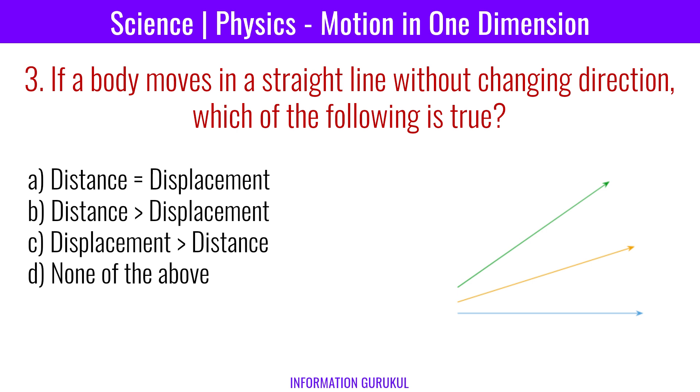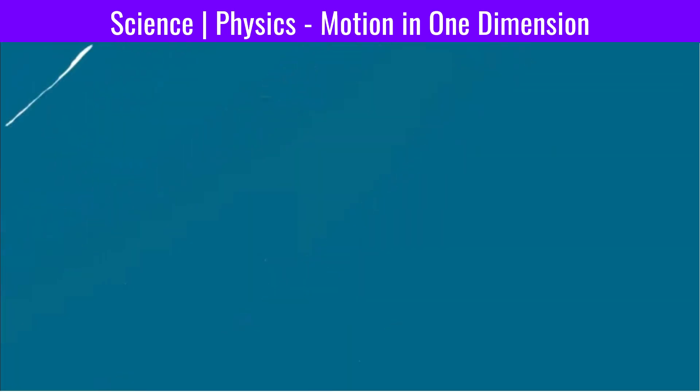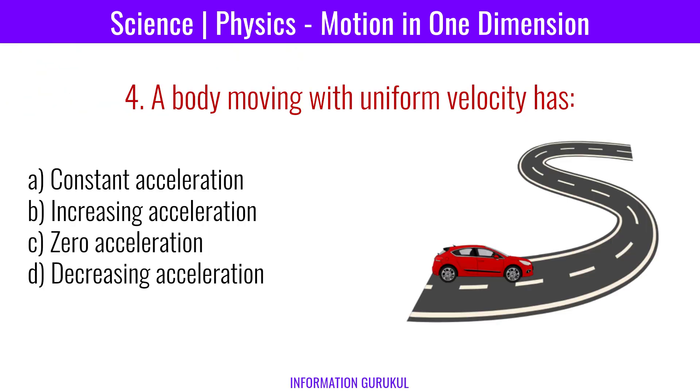Question three: If a body moves in a straight line without changing direction, which of the following is true? Distance is equal to displacement. A body moving with uniform velocity has zero acceleration.